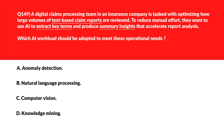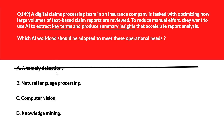By looking at the keyword you might already be guessing the correct answer. Option A: Anomaly Detection is related to abnormal behavior — since there's no requirement for detecting abnormal things in this question, it's out. Option B: Natural Language Processing enables parsing and understanding of written content to extract terms and create summaries — we'll keep this.